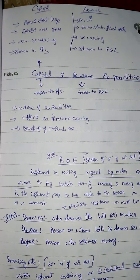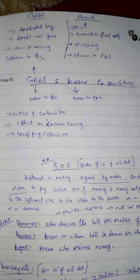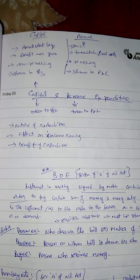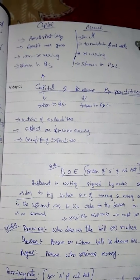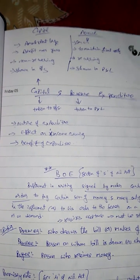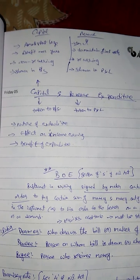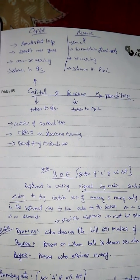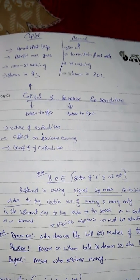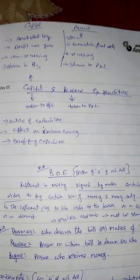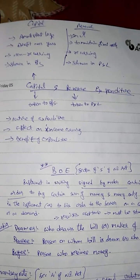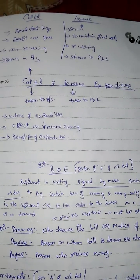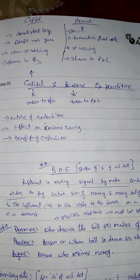The second point to classify expenditures is effect on income earning. Capital expenditure earns a long-term return, whereas revenue expenditure earns a short-term return. Capital expenditure is usually large and one-time; revenue expenditure is usually small and recurring in nature. For example, my power bill is incurred every month — it is a recurring, revenue expenditure.